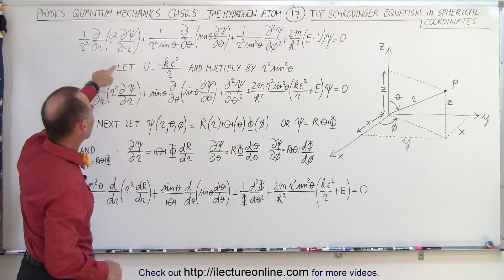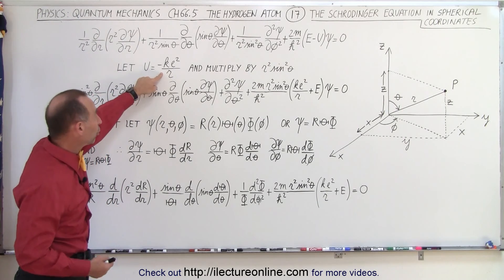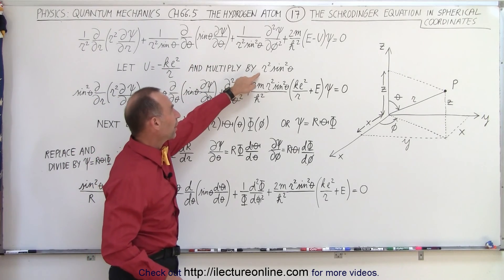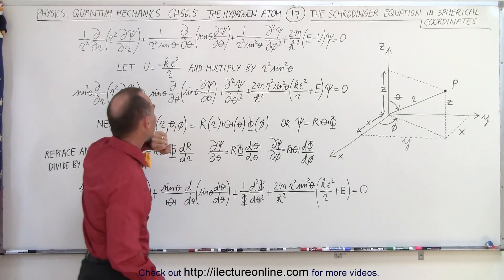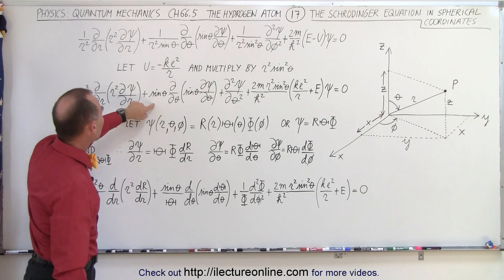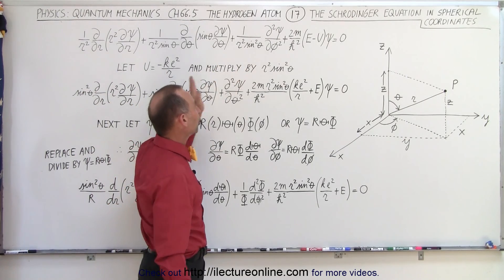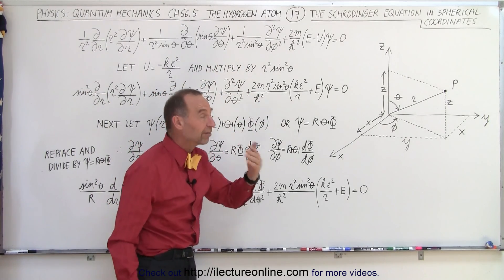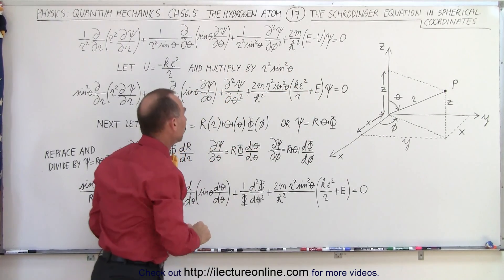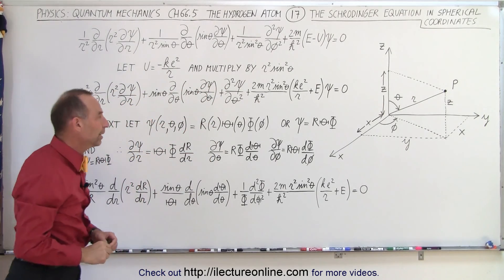First of all, we're going to replace U by what it's equal to in terms of potential energy due to Coulomb's Law — the Coulomb attraction. Then we're going to multiply both sides of the equation by r-squared sine-squared of theta. When we do that, here we end up with sine-squared of theta in the numerator, here we end up with just sine of theta in the numerator, and here it cancels out entirely, so the whole equation looks a whole lot simpler.